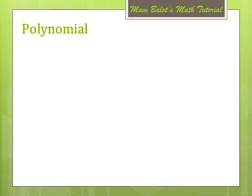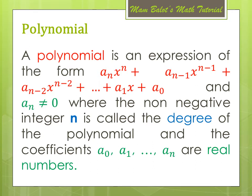Now, what is a polynomial? It is an expression of the form a sub n x to the n plus a sub n minus 1 x to the n minus 1 plus a sub n minus 2 x to the n minus 2 plus and so on plus a sub 1 x plus a sub 0. And a sub n must not be equal to 0, where the non-negative integer n is called the degree of the polynomial, and the coefficients a sub 0, a sub 1, and so on until a sub n are real numbers.